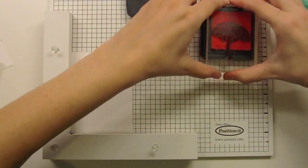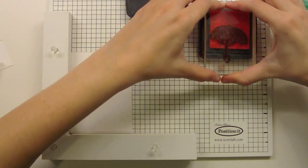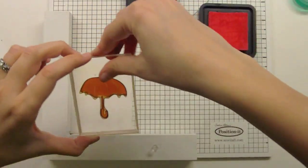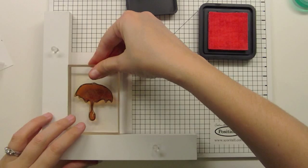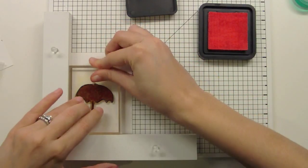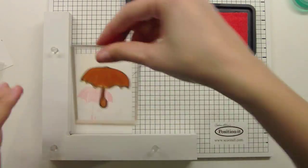So right now I've got my paper ready. I'm inking up my stamp in the Spun Sugar. And I'm just going to get it right in that corner of the Position It and press down. And you're going to see my image right there.